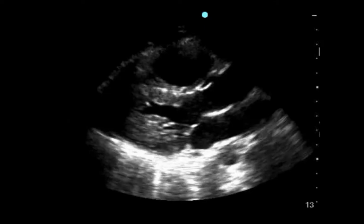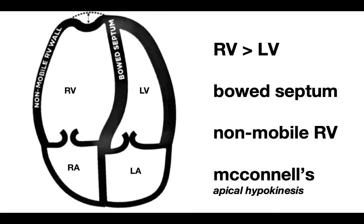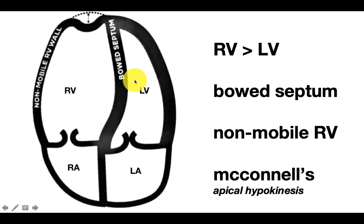The next question to ask yourself when seeing a dilated RV is: is there evidence of right heart strain? There are four things to look at when assessing for acute right heart strain. First, pay attention to size — once the RV starts to get larger than the LV, that's indicative of acute right heart strain. Next, pay attention to the septum. In a normal heart, the septum should not bow into the LV because the LV is a much higher-pressure system. But as RV pressures begin to elevate and dilate, you'll see the septum begin to bow into the LV, which is a marker of something bad. Next, pay attention to the RV wall — as the RV begins to dilate and fail, the RV wall will actually become less mobile.